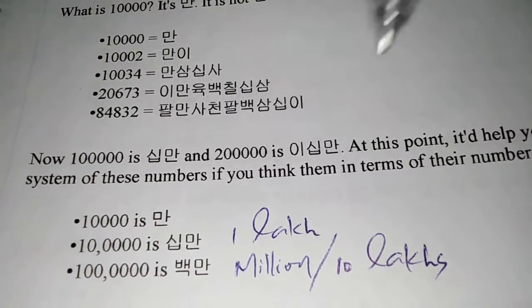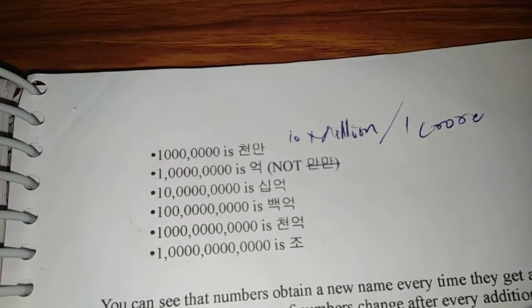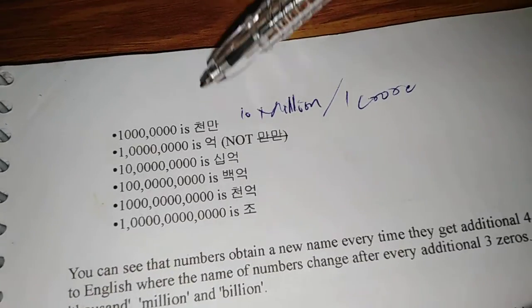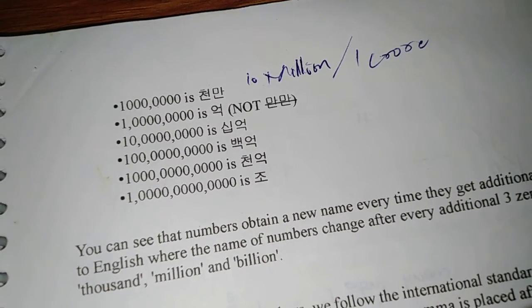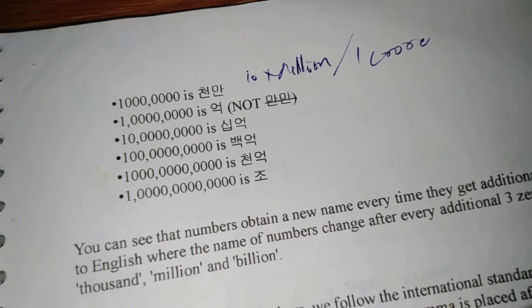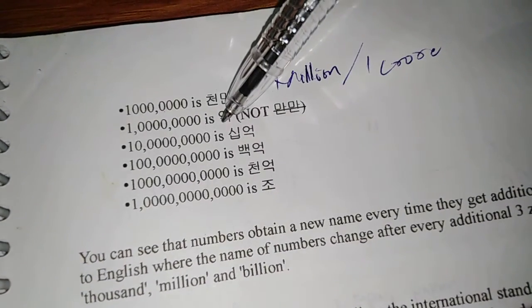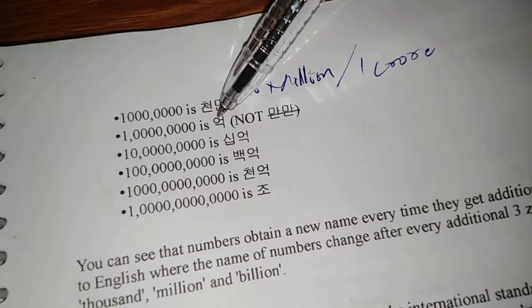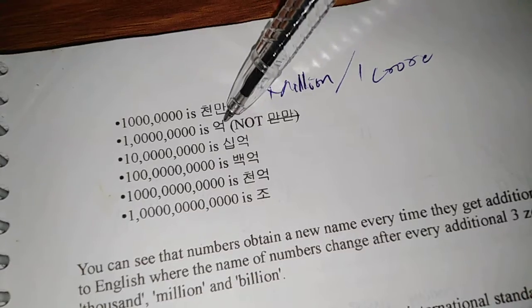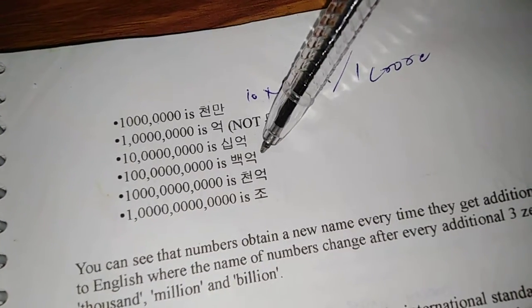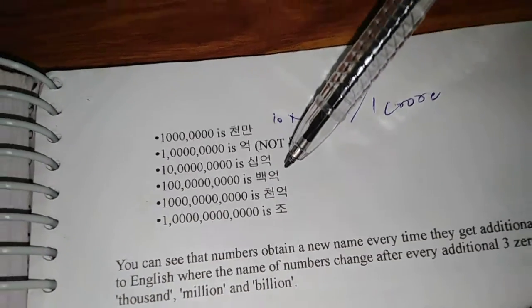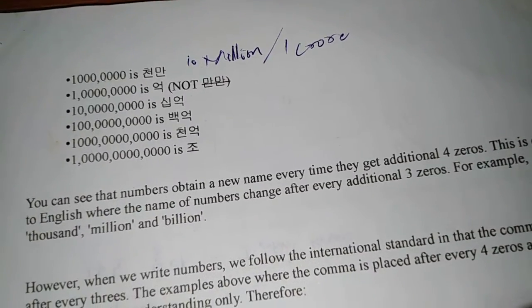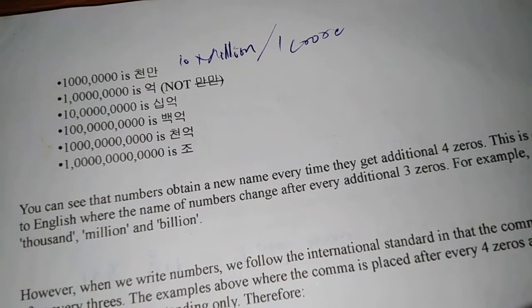If it is a million or ten lakhs, it would be baek-man. If it is ten million or one crore, it would be chon-man. The next one, if you have—it is not like you would just say man-man, man-man is wrong. It is eok. The next would be eok, and then when you're riding a ten to that eok, it would become shib-eok like that: baek-eok, chon-eok, jo. So if you see here, in Korean, numbers obtain a new name with every four zeros.